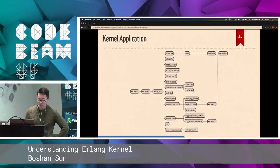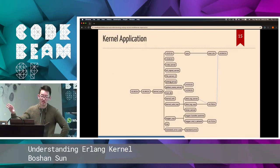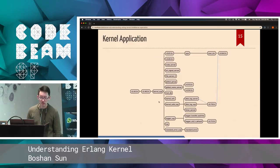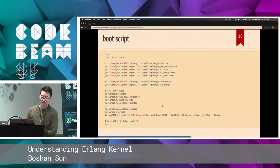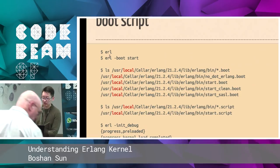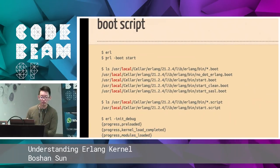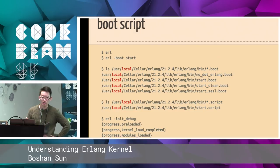With all that context, the first process starts with 0.0.0 and goes through a lot of steps to do a bunch of stuff. After the Erlang beam starts, we get a supervision tree for the kernel application. How does the init process know what to do when it starts everything up — which process needs to start first, which second? The answer is a boot script. When we type 'erl', it's the same as typing 'erl -boot start'. The 'start' here means the Erlang beam is looking for a file called start.boot.